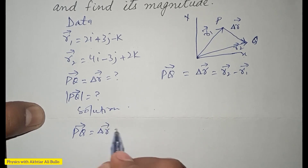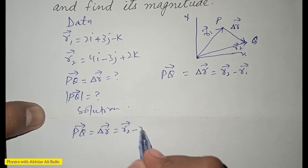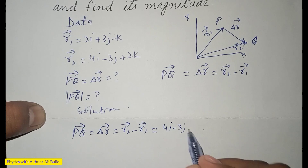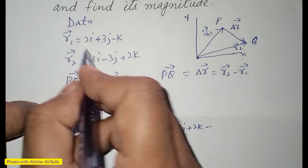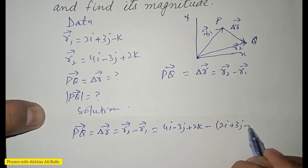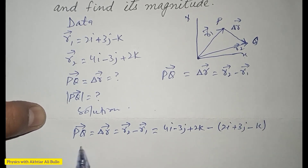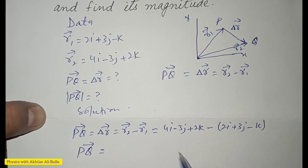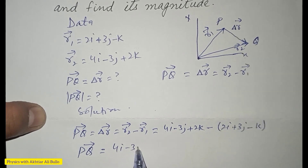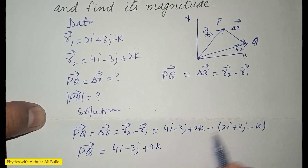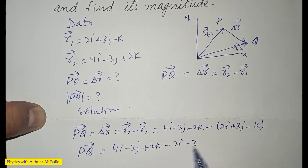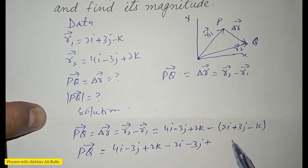For the solution, we use the formula: PQ = delta r = r2 - r1. Substituting, r2 = 4i - 3j + 2k and r1 = 2i + 3j - k. Distributing the negative sign: 4i - 3j + 2k - 2i - 3j + k.